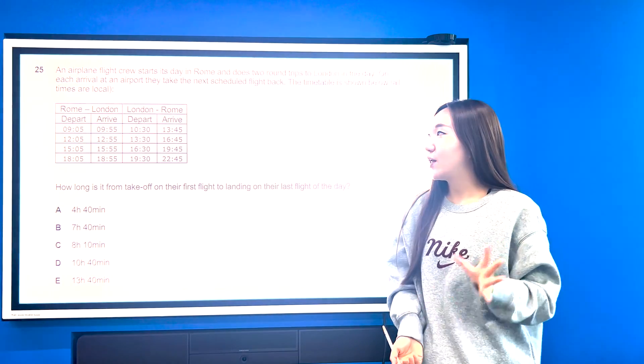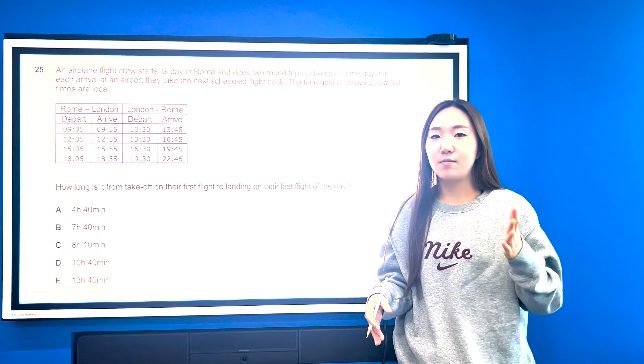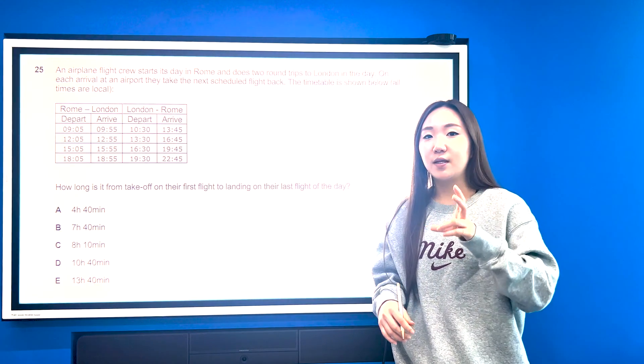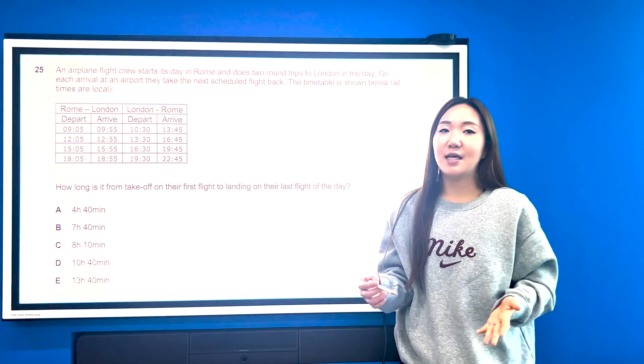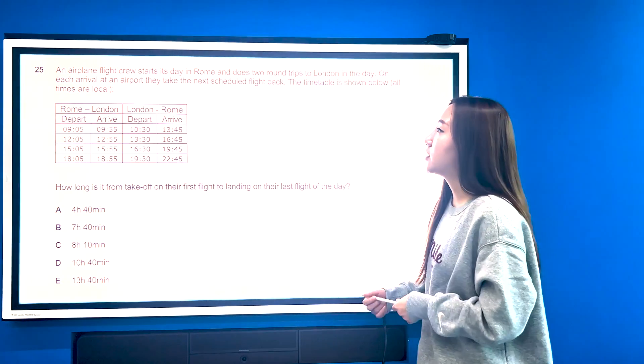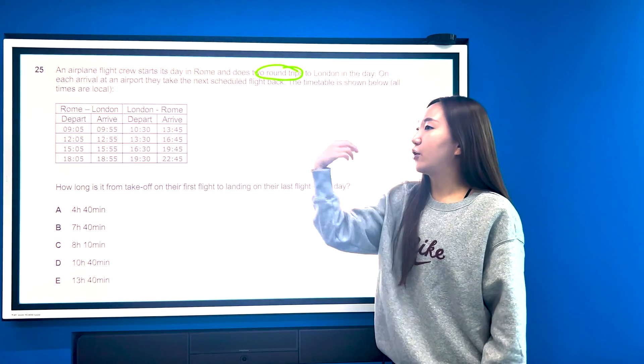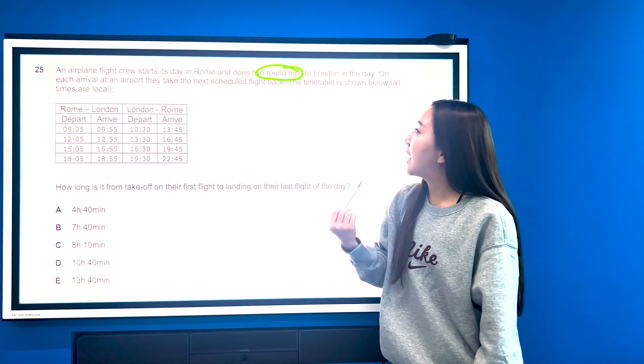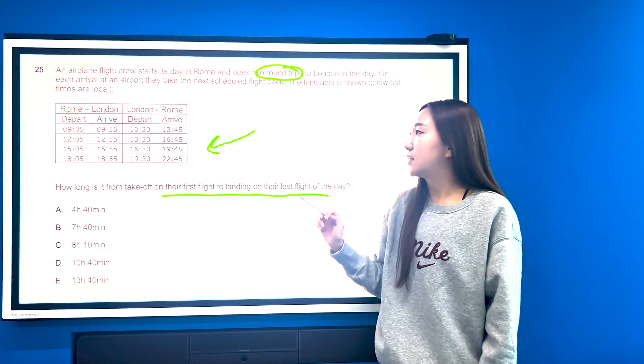Right, so the third type of question that you should familiarize yourself with are the time questions. Now time questions can come up in lots of different ways, but they do tend to come up at least two or three times every paper. So it would be good I think to prepare yourself in terms of knowing your 12 and 24-hour clocks and knowing also that 15 minutes is a quarter, these sorts of things, just to make sure that you can move through fairly quickly. But again, none of these tend to be that complicated. Maybe get used to time zones and how that works as well because that is also a very common question type. So here we're looking at an airplane flight crew starting its day in Rome, and it does two round trips, meaning that they go to London and then back to Rome and then back again. And then at each arrival at the airport they take the next scheduled flight back. The timetable is shown below. How long is the time taken from first flight to landing on their last flight of the day?